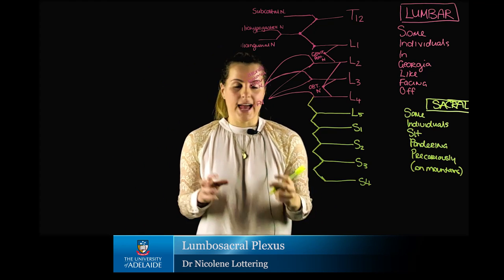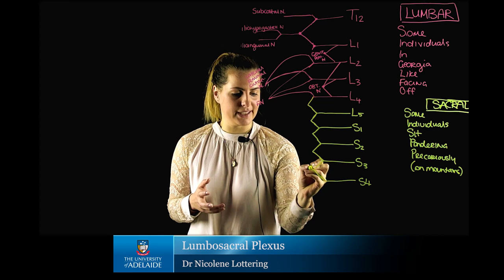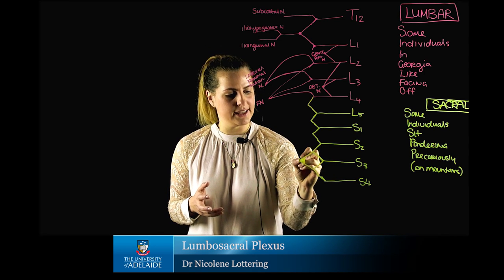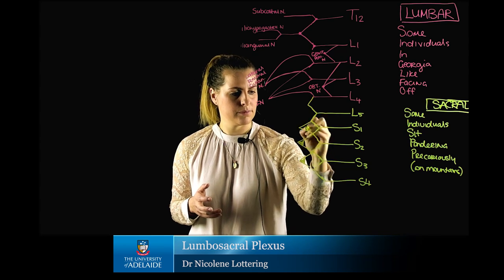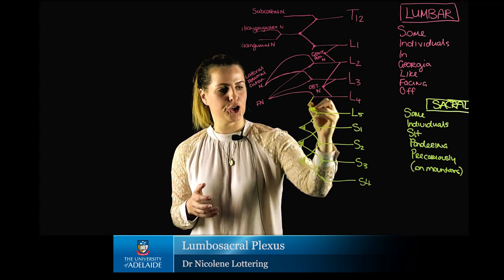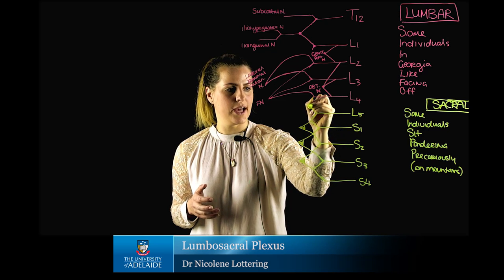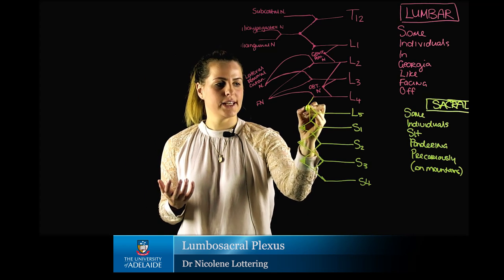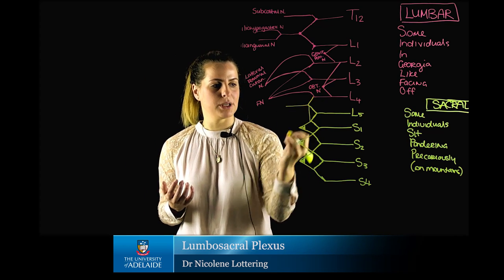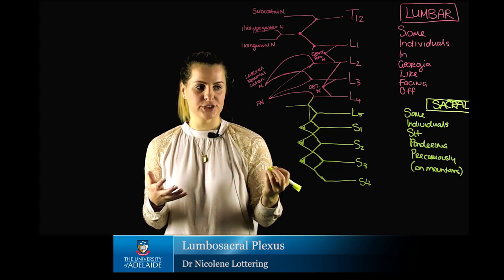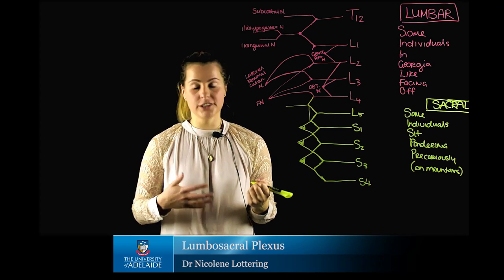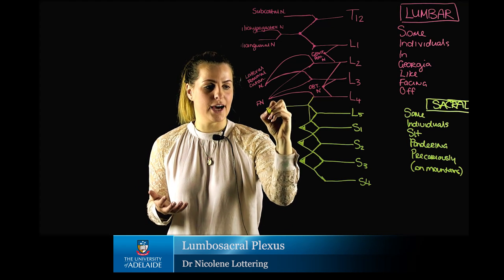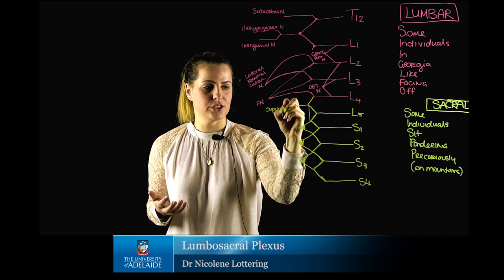'On mountains' comes into it with respect to creating three mountains — just pretend there is snow on our mountains — and then we have a plateau associated with L4 to S1. Once you remember this, we can draw a stem coming from the superior aspect of our plateau, which is going to be the first major peripheral nerve, 'some,' which is our superior gluteal nerve.